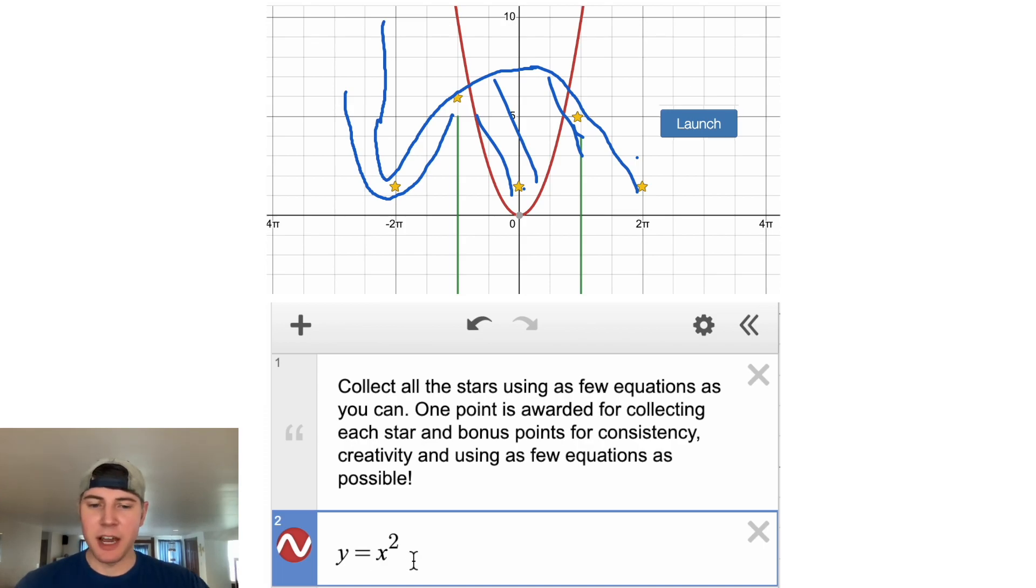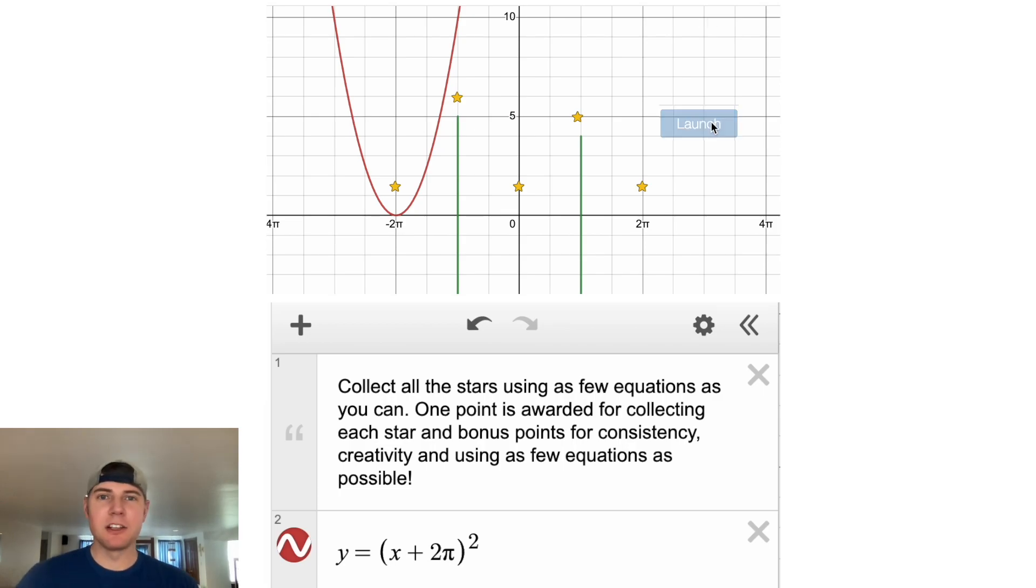So to shift it to the left, we're going to put this x in parentheses and then we're going to say plus, and I want to move it all the way over to here, so I'm going to say plus two pi. Let's get rid of my drawings. Let's hit launch.